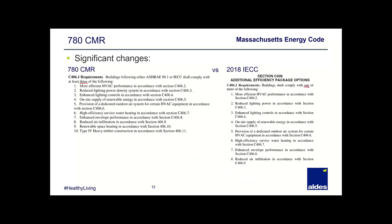Another significant difference between 780 CMR and the IECC comes from Section 406.1. In the CMR, you must comply with at least three of ten items, including more efficient HVAC systems, reduced lighting power density, on-site renewable energy supply, and enhanced envelope performance. Compare that to the IECC, which requires only one of eight options. CMR gives a couple more options since we need three of them, but it's still a significant challenge, especially with stretch code on top.